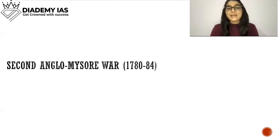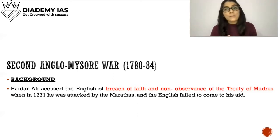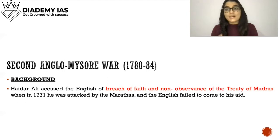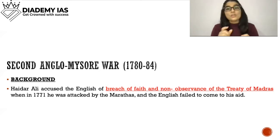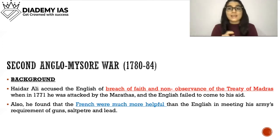The Second Anglo-Mysore War took place from 1780 to 1784. Hyder Ali accused the English of breach of faith and non-observance of the Treaty of Madras — when in 1771 he was attacked by the Marathas, the English failed to come to his aid. This was the first reason for the Second Anglo-Mysore War.